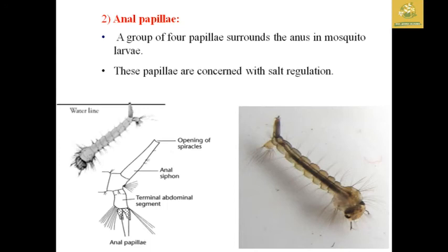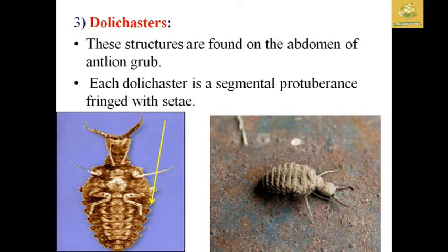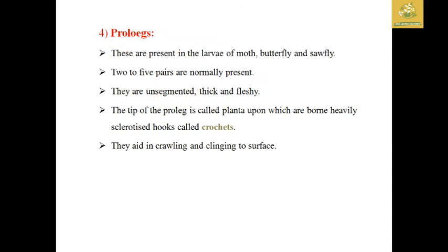Anal papillae are a group of four papillae surrounding the anus of mosquito larvae. They are concerned with salt-water regulation in mosquito larvae. Diastase are found in the abdomen of antlion grubs. The diastase is a segmented, protruding finger with setae — a cone-like structure with fringed features on the sides.